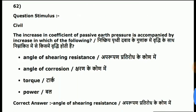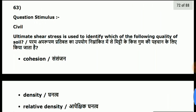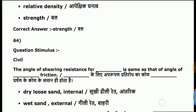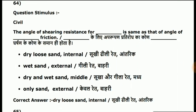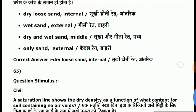Question 62: the increase in coefficient of passive earth pressure is accompanied by increase in which of the following? Answer is angle of shearing resistance. Question 63: ultimate shear stress is used to identify which quantity of soil? Answer is strength. Question 64: the angle of shearing resistance is formed in dry loose sand — internal friction.